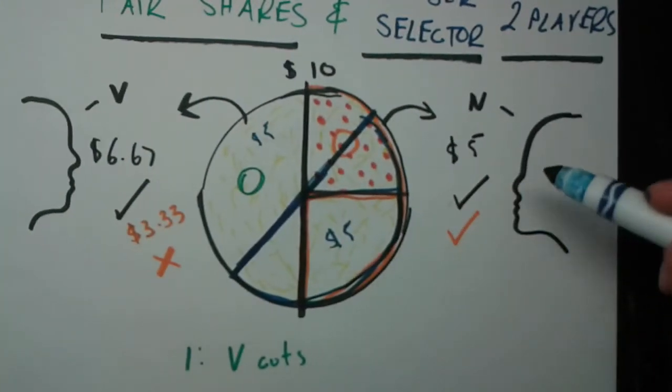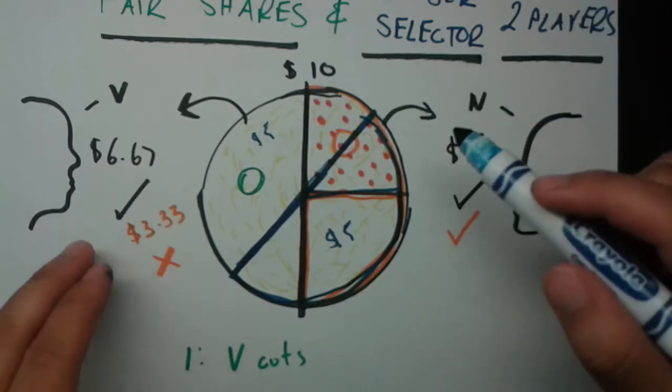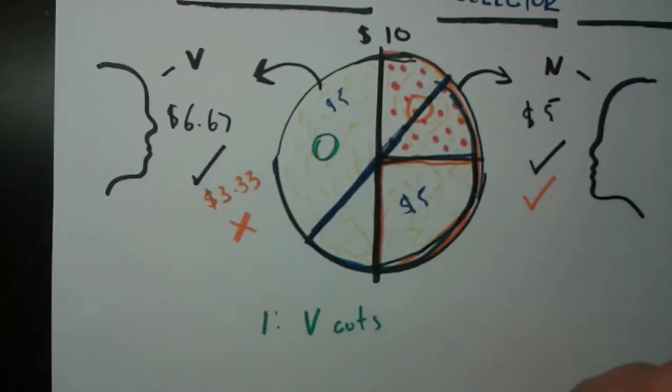Now this person, since he's indifferent, he can actually choose either one, and he'll be getting $5. In this case, each person will get $5 worth of pizza.